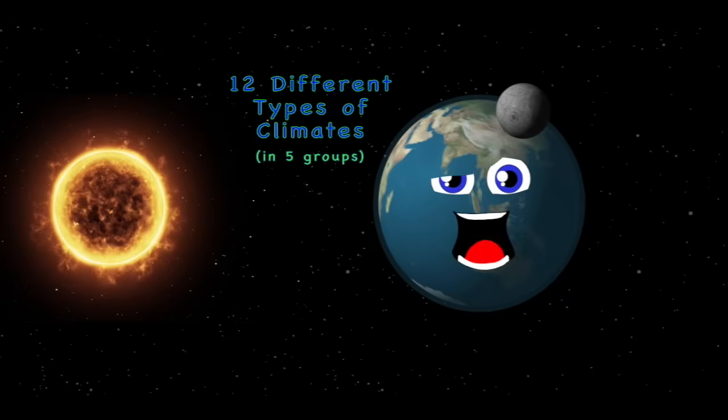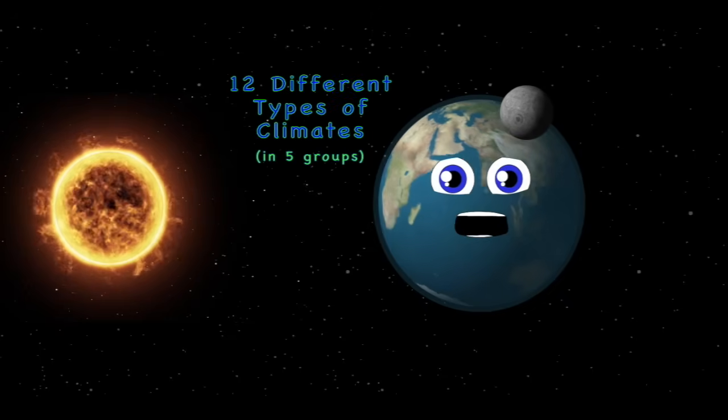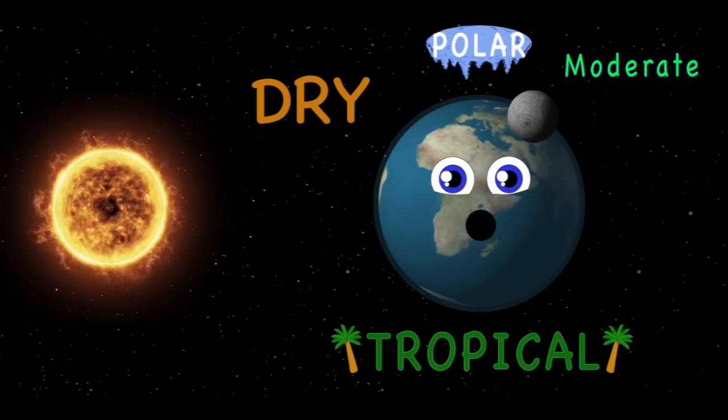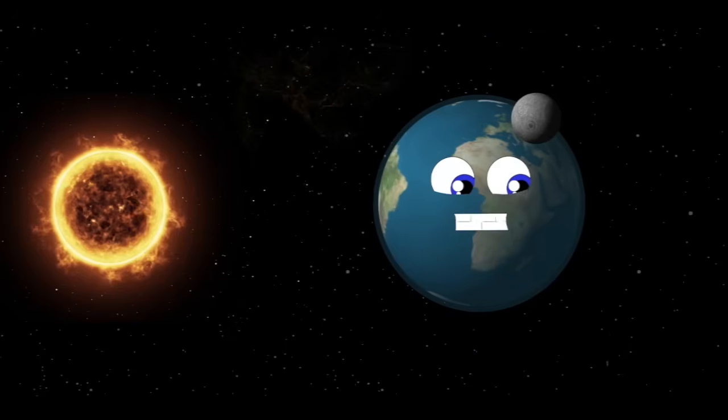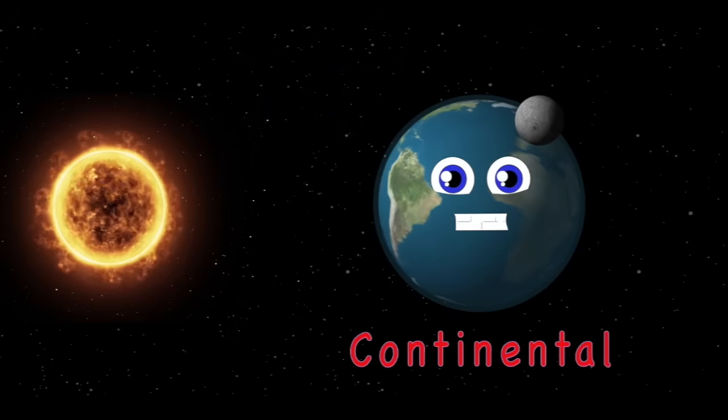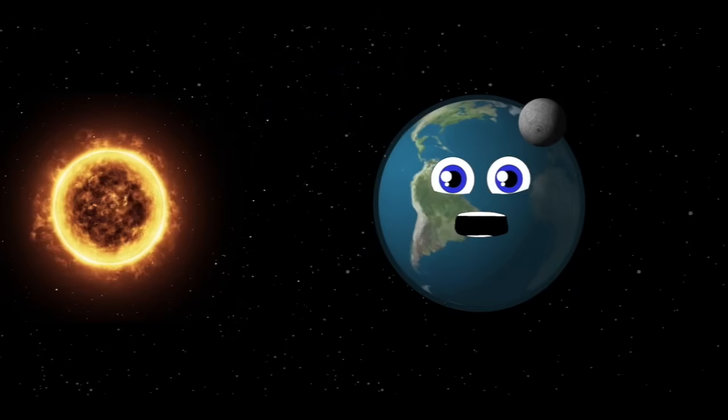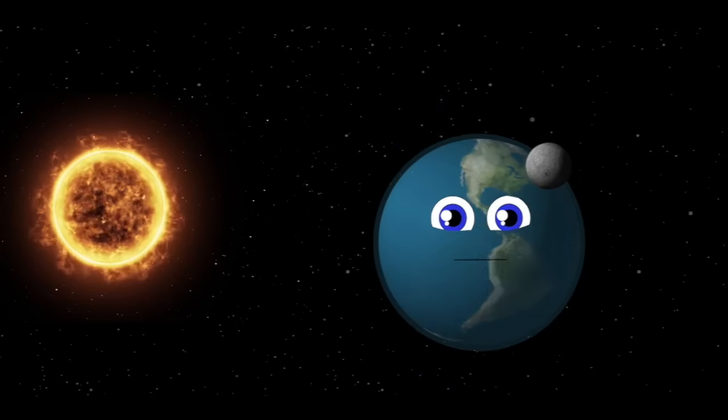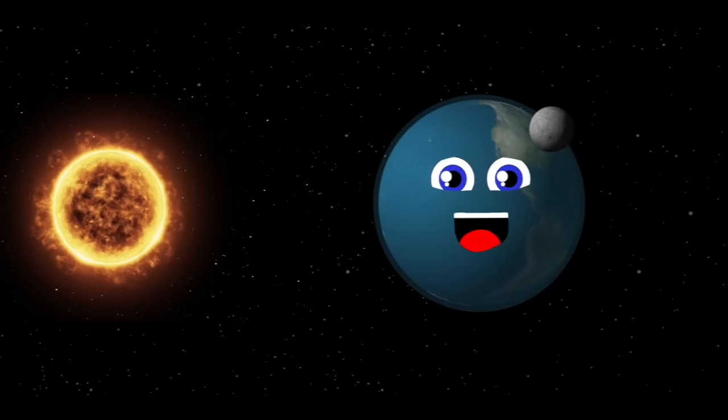There are twelve different types of climates that exist on me. Moderate, polar, dry and tropical are four groups you see. Then there is continental, it is the fifth category. One climate in no group is highland way above the sea.